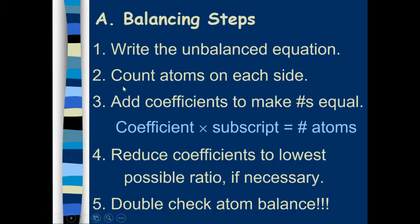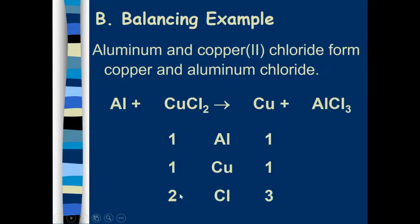So going back to our balancing step, we counted the atoms on each side. We are going to add coefficients to make the numbers equal. So we are trying to make the chlorines get to an equal number. Coefficients can only be put in the front of the chemicals. And so we are going to put coefficients where they are unbalanced. We're going to put a three right here and a two right here. This gives us six chlorine because we are going to multiply the coefficient with the subscript. That gives us six chlorine on the left. And multiply the coefficient with the subscript over here. That gives us six chlorine on the right.